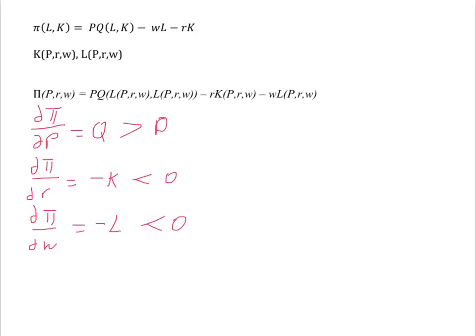Further, notice that the profit function is homogeneous of degree 1 in input and output prices. That is, if we double P at the same time we are doubling R and W, then our profits will double.